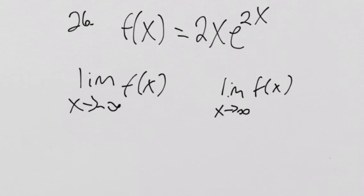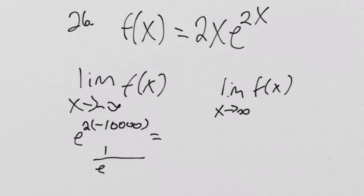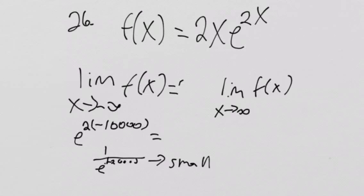For the function 2x·e^(2x), the first thing it asks is the limit as x approaches negative infinity. You should think about what's going to happen if you plug in negative infinity. e to the 2 times a negative number, like negative 10,000, is going to be equal to 1 over e to the positive 20,000, because it's a negative exponent that drops down to the denominator. So this is super small, meaning we're multiplying by an insanely small number, which means it's just going to approach 0.